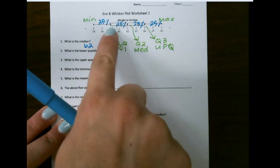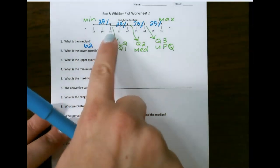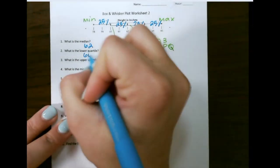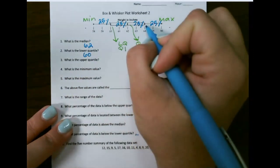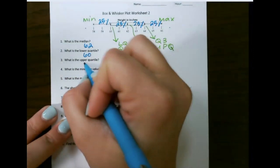The lower quartile, again, is the bottom of the box, so that's right at 60. And the upper quartile is the top of the box, and that one is at 64.